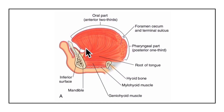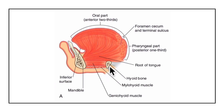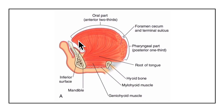The inferior surface of the tongue is confined to the oral part only. The root of the tongue is attached to the styloid process and the soft palate above, and to the mandible and hyoid bone below. Because of these attachments, we are not able to swallow the tongue. In between the mandible and the hyoid bone, the tongue is related to the geniohyoid and the mylohyoid muscles.